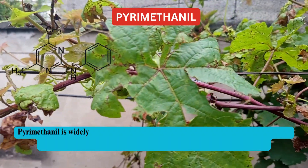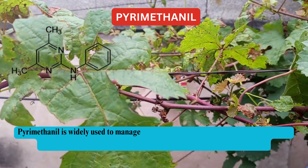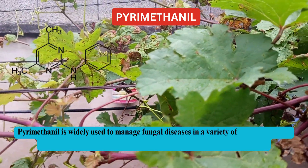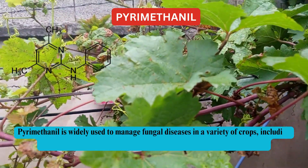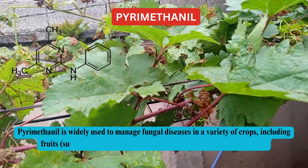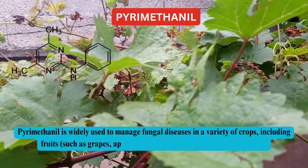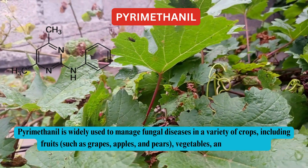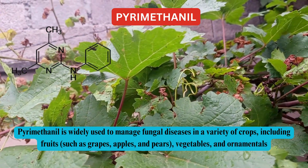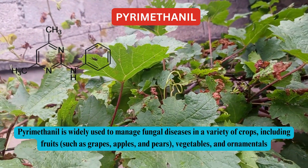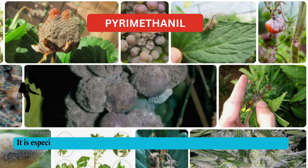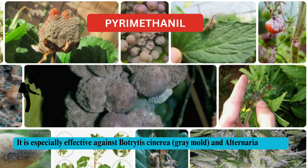Pyrimethanil is widely used to manage fungal diseases in a variety of crops, including fruits such as grapes, apples and pears, vegetables and ornamentals. It is especially effective against Botrytis cinerea, gray mold, and Alternaria species.